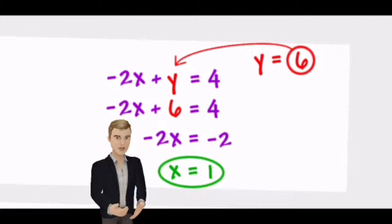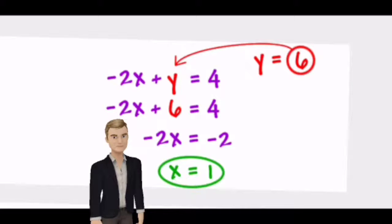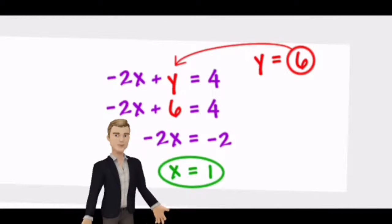The problem then was reduced to -2x = -2. After both sides were divided by -2, it turned out that x = 1. This is a way to solve a problem using the elimination method.